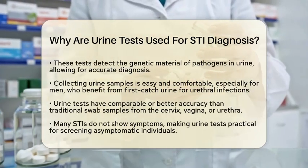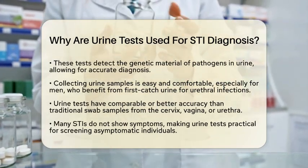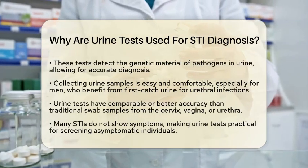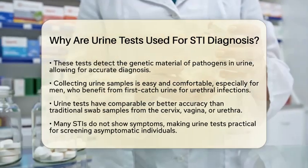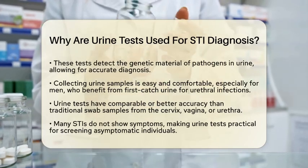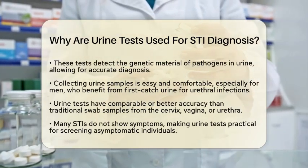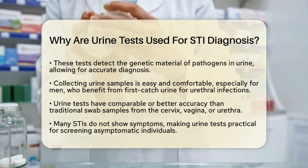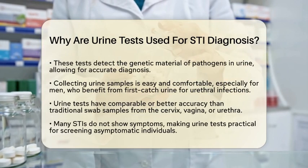High accuracy is another significant advantage. Nucleic acid amplification tests applied to urine samples have sensitivity and specificity that can be comparable to or even better than traditional swab samples from the cervix, vagina, or urethra. This means urine testing can reliably detect infections like chlamydia and gonorrhea.